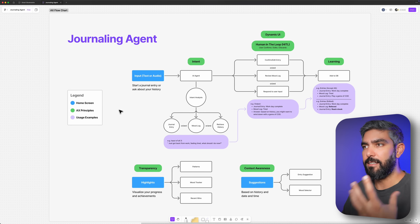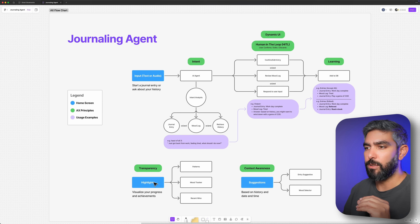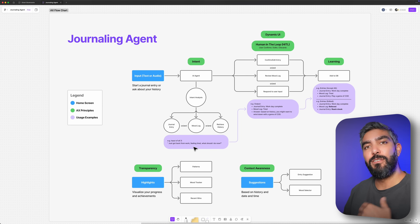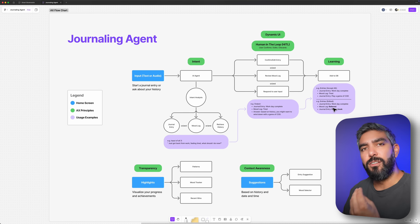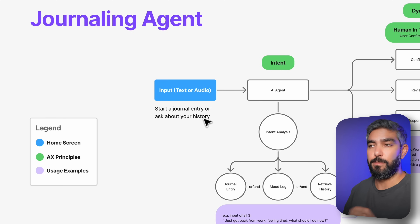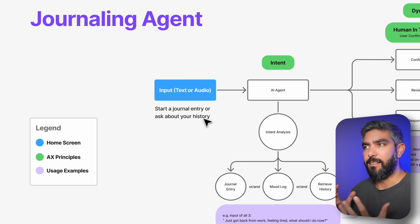I added a legend to help you understand this chart. In blue is the homepage where the user will start, and in green I marked all of the AX principles to keep in mind — so you can see how AX principles are applied while planning the app. In purple I added examples to clarify the intended usage. To start, we have the main input field — the core of the whole app — which takes text or voice. The AI agent will identify your intent, and that's the first AX principle: intent recognition. The agent has to understand what the human needs.